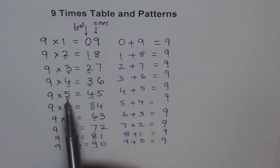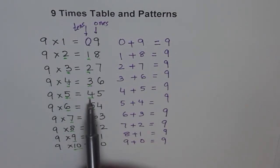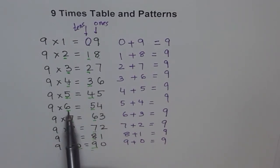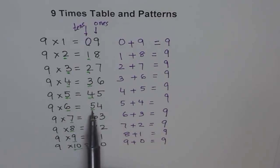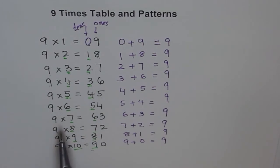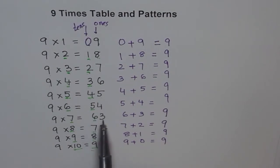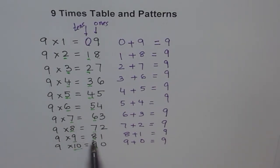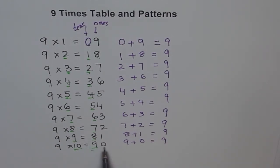9 times 5: one less than 5 is 4, and 4 plus 5 is 9, so 45. 9 times 6: one less than 6 is 5, and 5 plus 4 is 9, so 54. 9 times 7: one less than 7 is 6, and 6 plus 3 is 9, so 63. 9 times 8: one less than 8 is 7, and 7 plus 2 is 9, so 72. 9 times 9: one less than 9 is 8, and 8 plus 1 is 9, so 81. 9 times 10: one less than 10 is 9, and 9 plus 0 is 9, so 90.